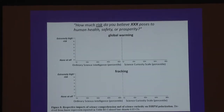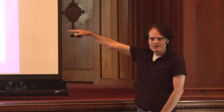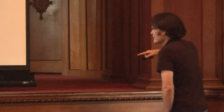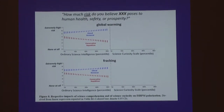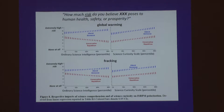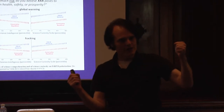Here's the surprising part. I've already shown you that people polarize as they become more proficient in understanding science on issues like global warming and fracking. That doesn't happen with science curiosity. There's still a difference between Republicans and Democrats, but they're tending in the same direction. Among the people who are high in science curiosity, you don't see that perverse effect of greater polarization associated with higher science comprehension — the curiosity is canceling it out.